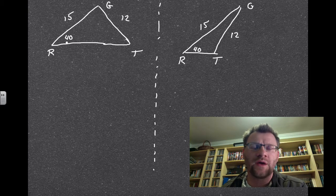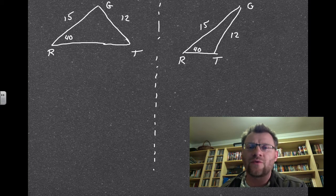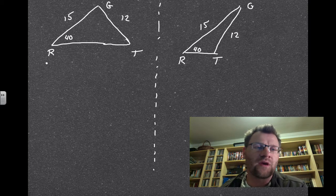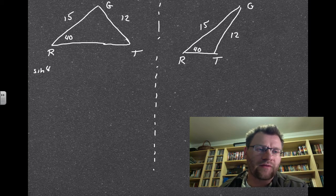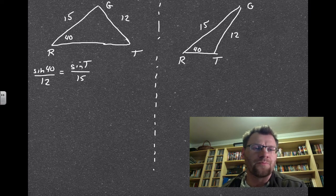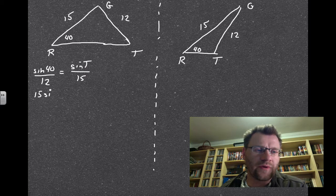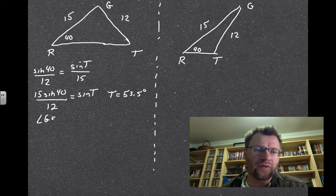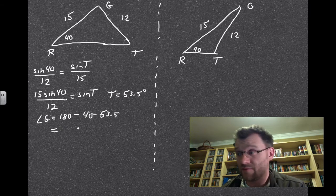We have two triangles: in the first, angle T is acute; in the second, angle T is obtuse. Solving means finding all missing angles and sides. Using the law of sines: sine 40 divided by 12 equals sine T divided by 15. Rearranging: 15 sine 40 over 12 equals sine T, giving angle T equal to 53.5 degrees. Angle G is then 180 minus 40 minus 53.5, so angle G equals 86.5 degrees.